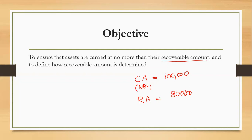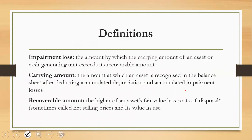The next objective is how to identify recoverable amount. Now let's see the definitions covered under this accounting standard. First, impairment loss: the amount by which the carrying amount of an asset or cash-generating unit exceeds its recoverable amount. In simple words, if carrying amount is greater than the recoverable amount, that excess is called impairment loss.